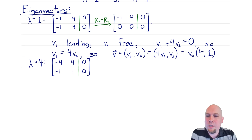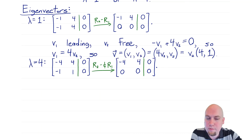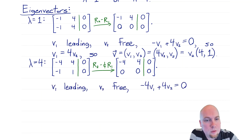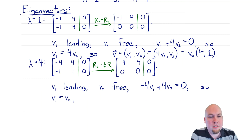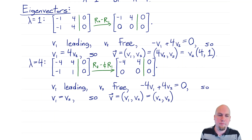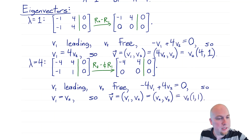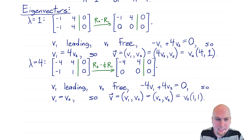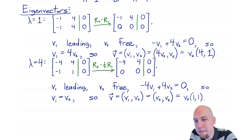For λ = 4: subtract 4 off the diagonal, augment with zeros, and do one row operation to get row echelon form. Again V1 is leading, V2 is free. The top equation gives −4V1 + 4V2 = 0, so V1 = V2. The eigenvector is V = V2 · [1, 1]. So all eigenvectors are multiples of [1, 1] — a one-dimensional eigenspace with basis [1, 1]. That's the eigenvector I'll use in the diagonalization.